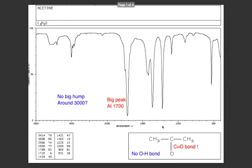Fourth and final example, no big hump between 2500 and 3500. No OH bond in the structure. But there is a peak near 1700, so there is a carbon-oxygen double bond. And this example I chose was propanone, also known as acetone. Really, the only feature of this is that there is a carbon double bond to an oxygen. That's it.